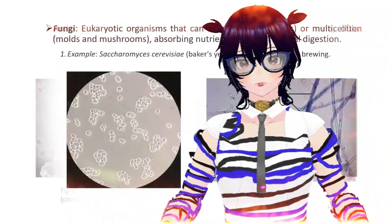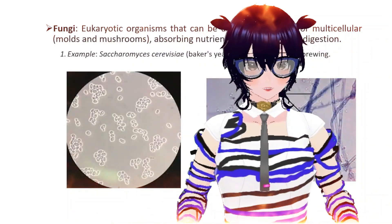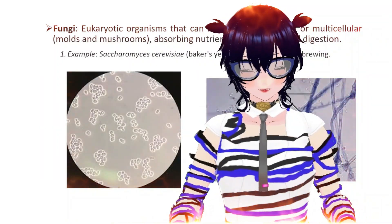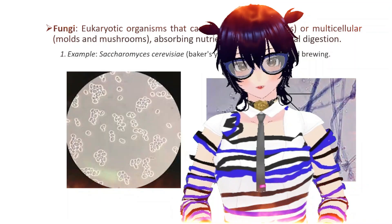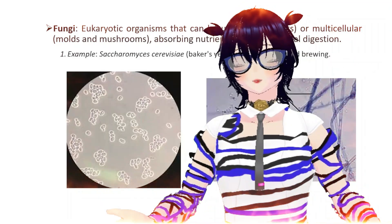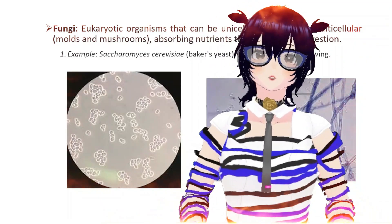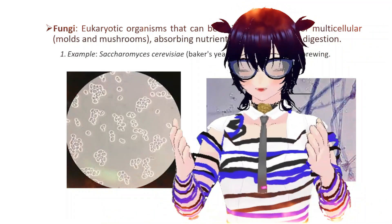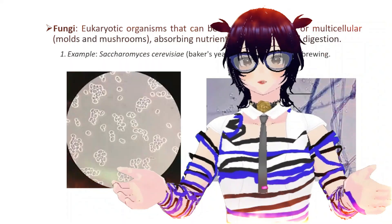Now comes the fungi. The fungi are eukaryotic — here comes a eukaryotic organism. The bacteria and the archaea are the prokaryotes. They have no true nucleus, but the fungi actually has a true nucleus.